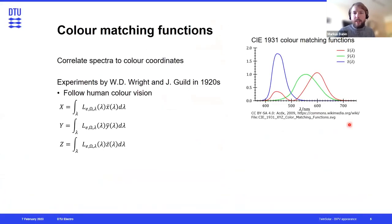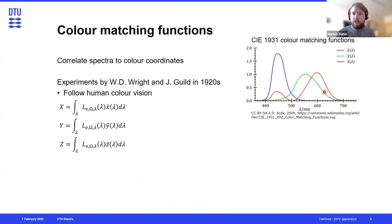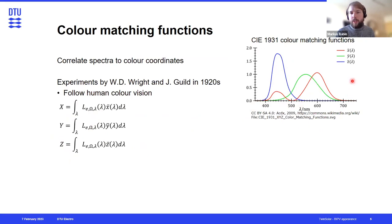So how can we approximate human color vision when describing a color we measure in nature? We can do that using so-called color matching functions, which were determined from human experiments in the 1920s. These resulted in three color matching functions — one for each primary color: blue, green, and red. If we take a reflection spectrum or a spectrum emitted from a light source and multiply it by these color matching functions, we arrive at so-called color coordinates. The one recommended by the International Lighting Commission is the CIE XYZ color space.